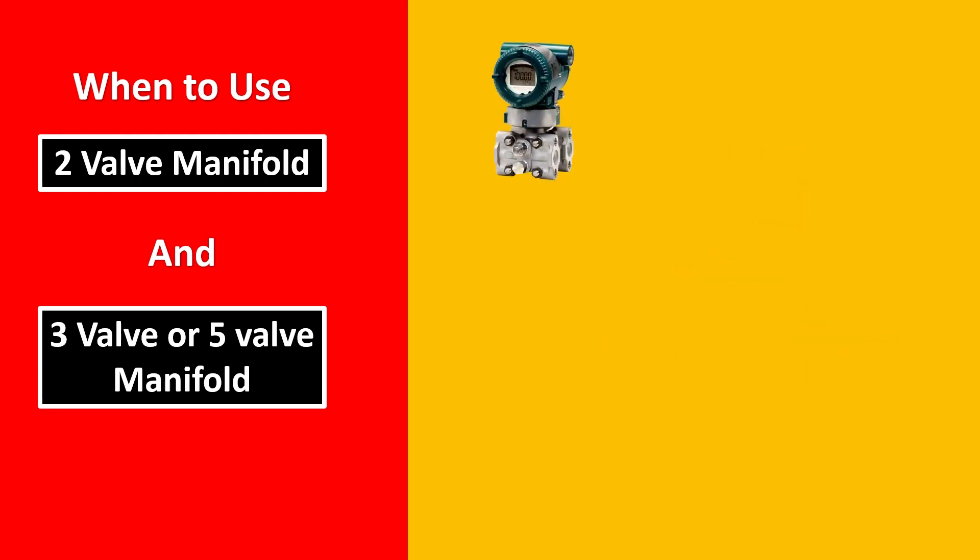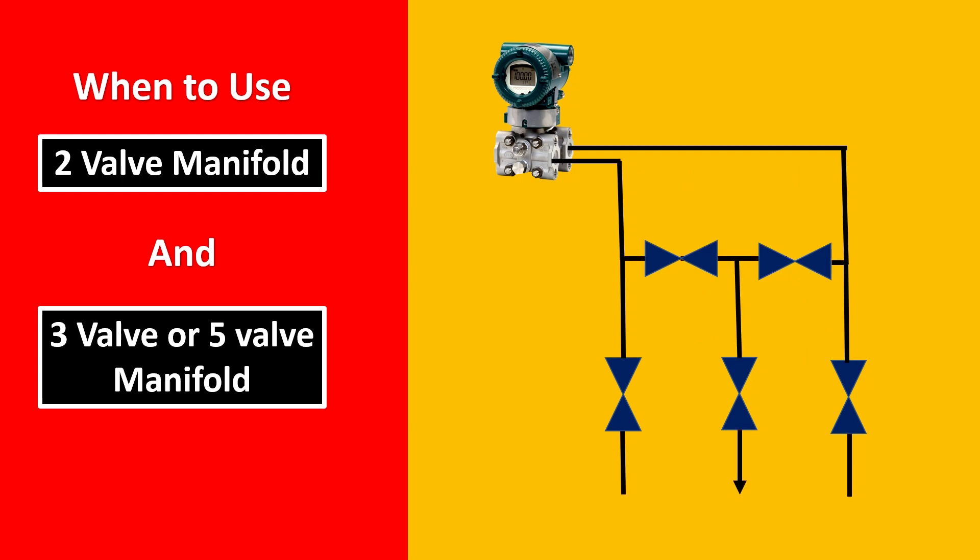But when it gets to a 5-way manifold now here, a lot of configurations are available. This is one of the most used configurations. Here you would keep the, remember the 2 extreme sides are always open and the middle 3 work together. So the middle 3 are closed in normal operation. Remember that 5-way manifold is specially used for venting things or draining things. So you have the extra precaution or the extra way to vent or drain. Now here in operation when you want to remove your transmitter, you would have to keep the extreme 2 valves closed. And the middle 3 are going to remain open. So the first 2 would equalize it and the third one would vent it out either to a closed system or to the atmosphere.